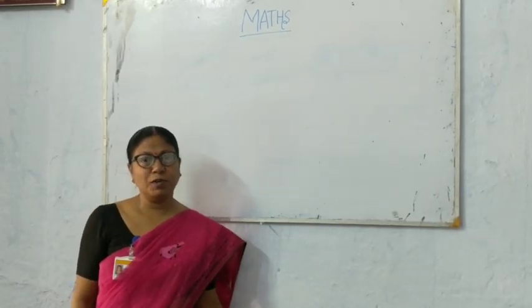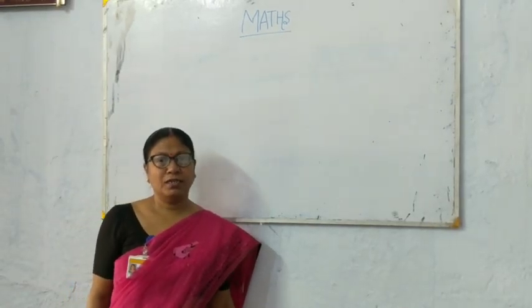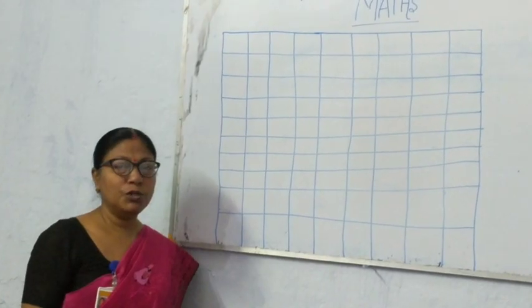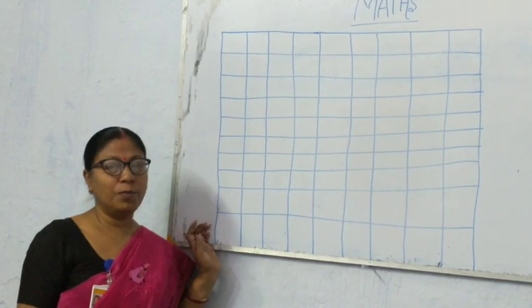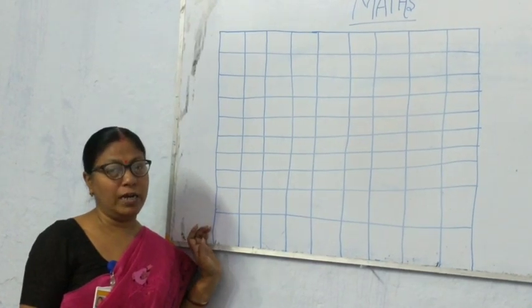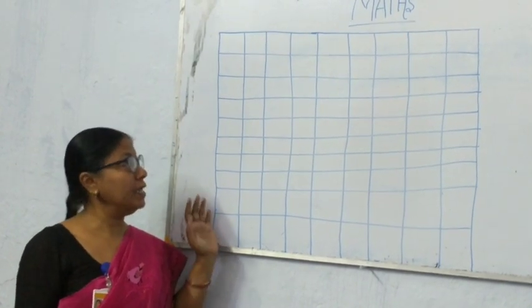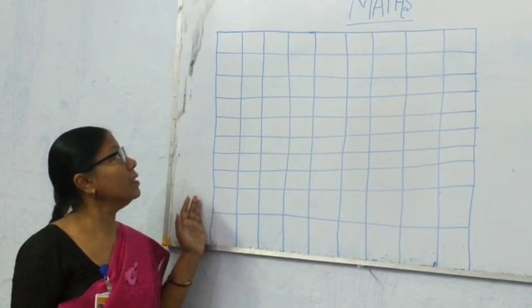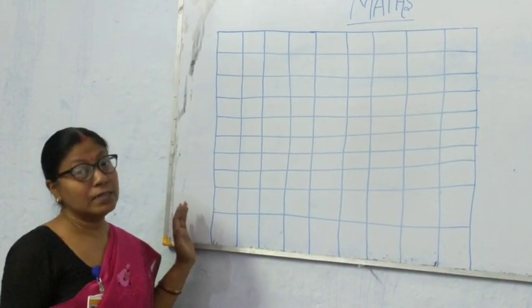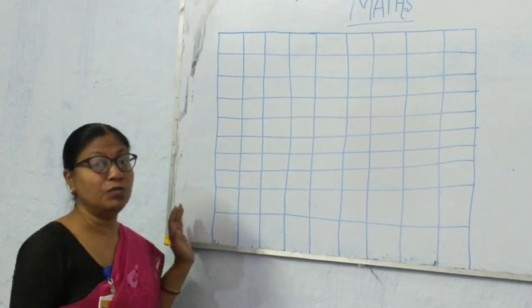Take out your maths copy, children. Your maths copy is a square-lined copy, like this. Then start to write with me.